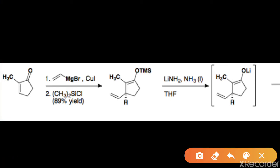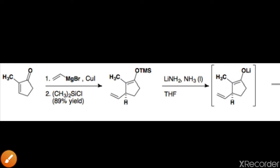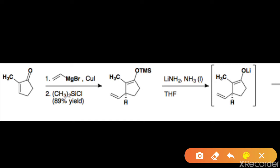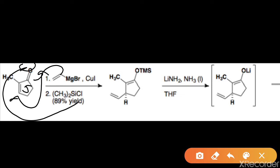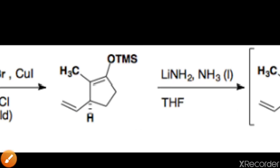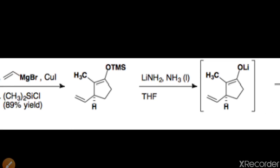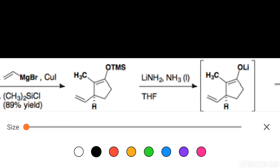They started with 2-methylcyclopentanone, which reacted with vinyl magnesium bromide in the presence of copper iodide. This vinyl magnesium bromide — a Grignard reagent — will attack on the beta carbon. This will result in a negative charge on the oxygen, which will then attack on the silicon and chlorine will leave, giving us the trimethylsilyl enolate. This TMS enolate was then treated with lithium amide in the presence of liquid ammonia — a strong base — which replaces the TMS group with lithium, giving us Intermediate A.